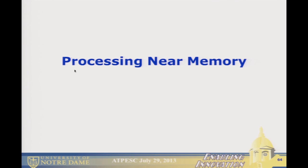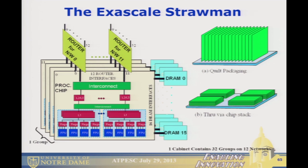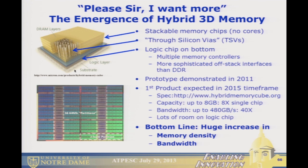The last category — and I think this is the important one, where things are going — goes back to the Exascale straw man. We saw those 16 DRAMs being packaged in one of two ways: either quilt packaging, where DRAM parts were tipped on their side and soldered along the edges, or by stacking them on the logic die with through-silicon vias — little holes with metal wires going down so all parts share vertical buses coming up from the logic die. I think we're going to see more and more 3D stacked memory, and this is where there's going to be a major impact on architecture.